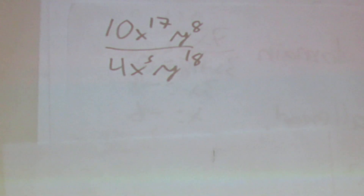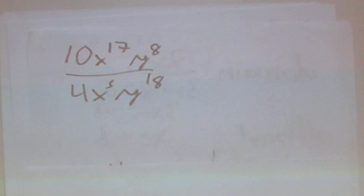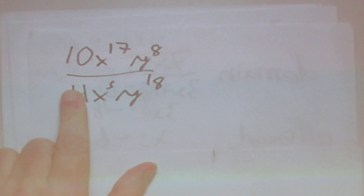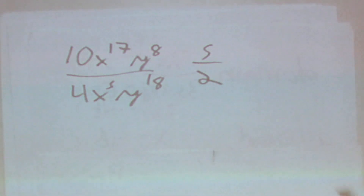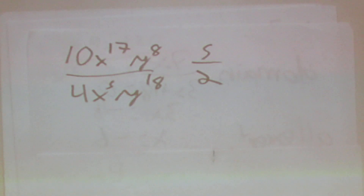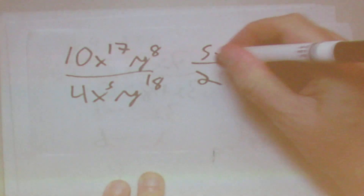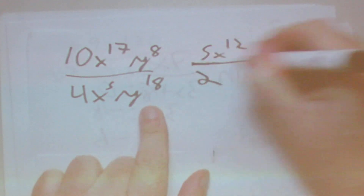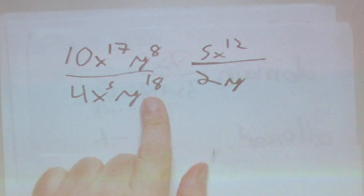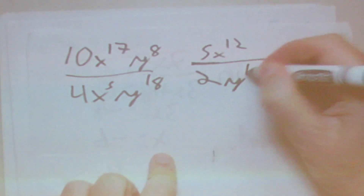Next, we're going to be given something like 10x to the 17th times y to the 8th over 4x to the 5th times y to the 18th, and we have to simplify. We simplify 10 and 4 by dividing both by 2 to get 5 over 2. We have x to the 17 over x to the 5, which is x to the 17 minus 5, or x to the 12. And for y, the bottom exponent is bigger, so y stays in the denominator: 18 minus 8 is 10, giving y to the 10th in the denominator.